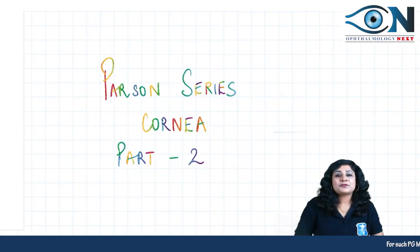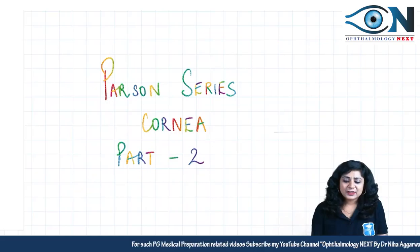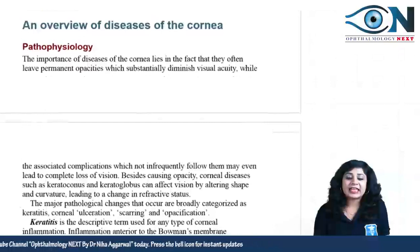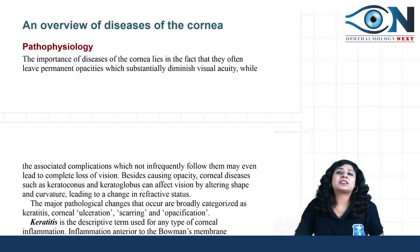Welcome to the Parson series. This is Part 2 of the cornea. If you remember, we had already talked about the anatomy, physiology, and biochemistry of the cornea in our last topic. Today we are dealing with the pathophysiology and pathology of the cornea.